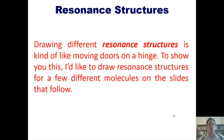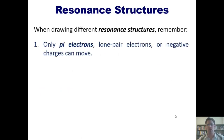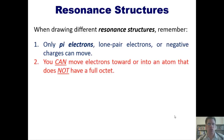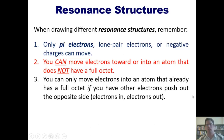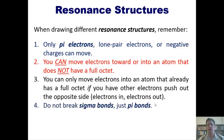Drawing resonance structures is like moving doors on a hinge. Before showing examples, here are the rules: only pi electrons, lone pair electrons, or negative charges can move. You can move electrons toward or into an atom that does not have a full octet. You can only move electrons into an atom that already has a full octet if other electrons push out in the opposite direction — electrons in, electrons out — otherwise you violate octets. Last rule: do not break sigma bonds, only pi bonds.